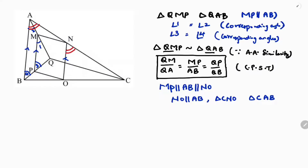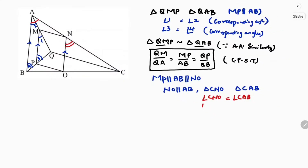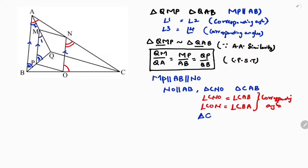For triangles CNO and CAB, angle CNO equals angle CAB by corresponding angles. On the right side, angle CON equals angle CBA, also by corresponding angles. So triangle CNO is similar to triangle CAB by angle-angle similarity.